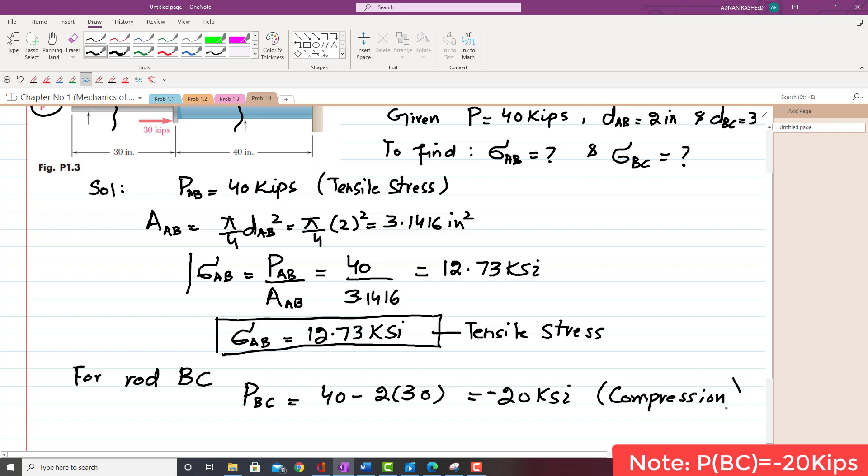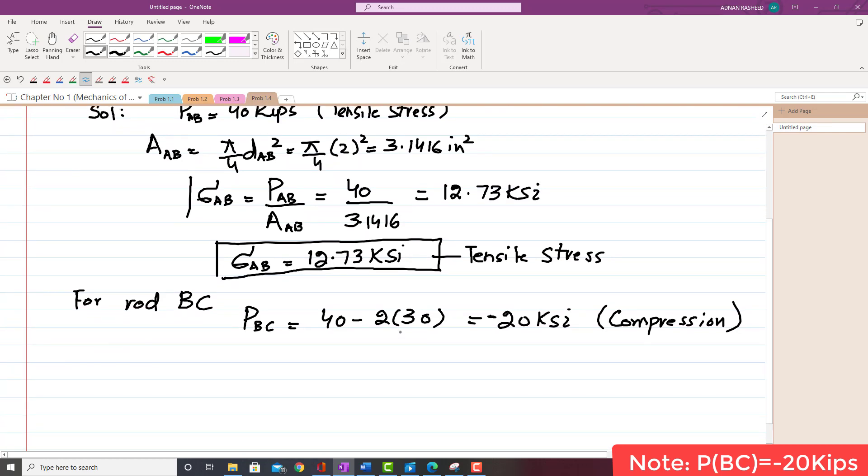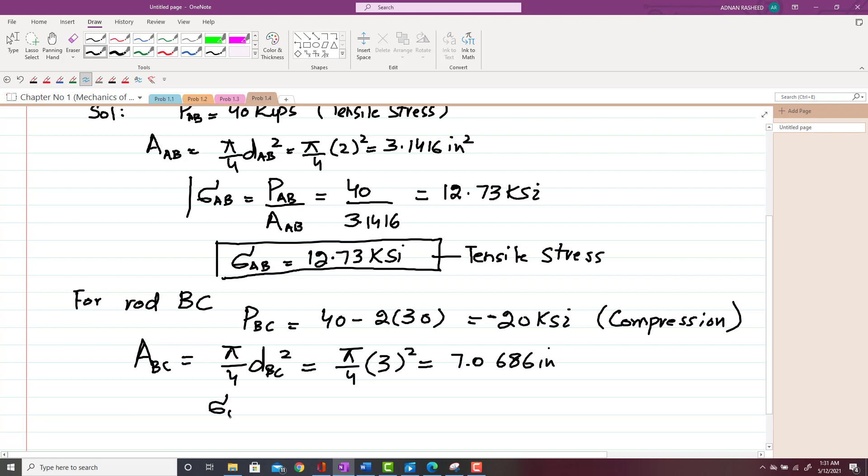So we have to find this compressive stress. So area of BC, which will be equal to π/4 × DBC², and that will give you π/4 × 3², which is equal to 7.0686 in². Now you have to find stress.